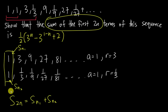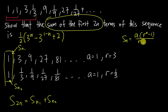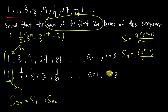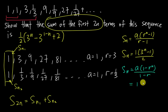For the Sn formula, it depends on the r value. If r is greater than 1, I use: Sn = a(r^n - 1) / (r - 1). So for the first subsequence, a is 1 and r is 3, giving Sn1 = (3^n - 1) / (3 - 1) = (3^n - 1) / 2. If r is less than 1, I use: Sn = a(1 - r^n) / (1 - r). For the second subsequence, a is 1 and r is one-third, giving Sn2 = (1 - (1/3)^n) / (1 - 1/3) = (1 - (1/3)^n) / (2/3).